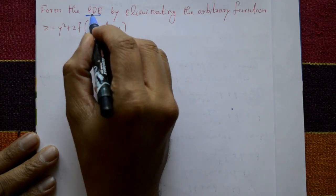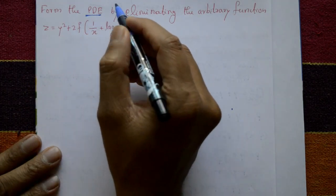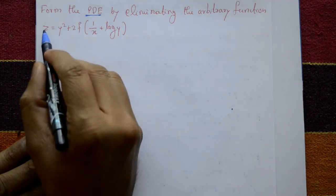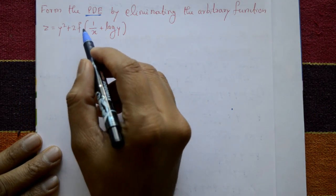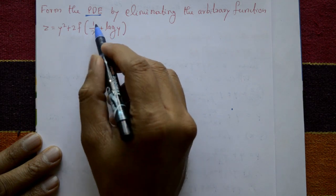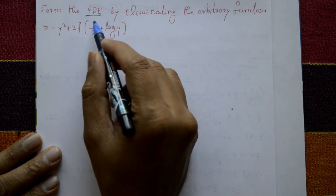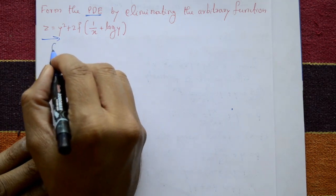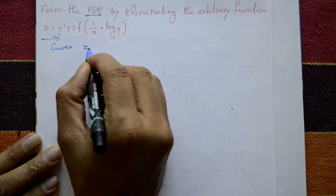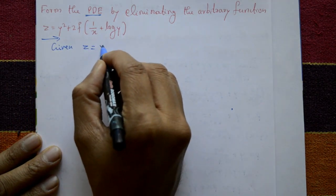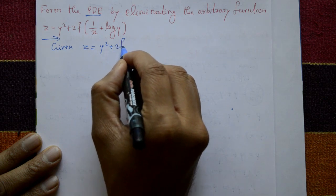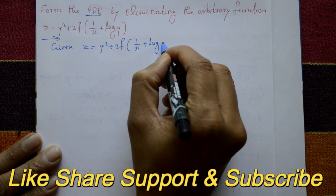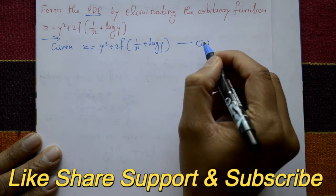Form the PDE (partial differential equation) by eliminating the arbitrary function. Given: Z is equal to y squared plus 2f of (1/x + log y). Now eliminating the arbitrary function — call this equation number 1.